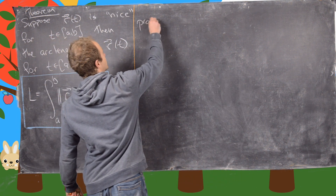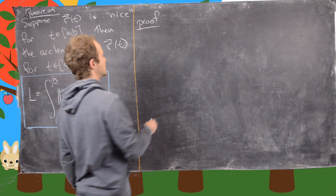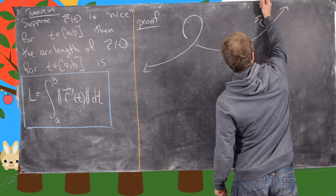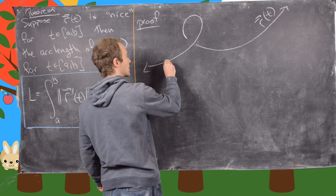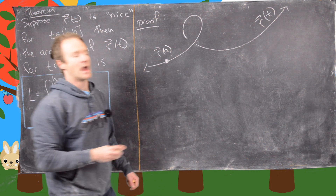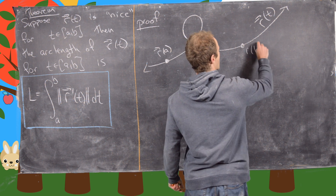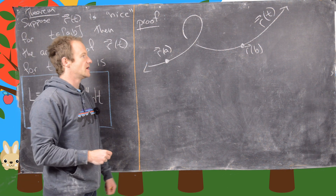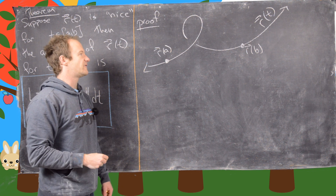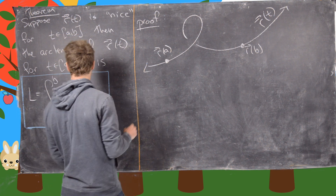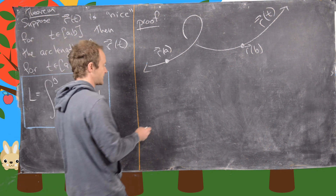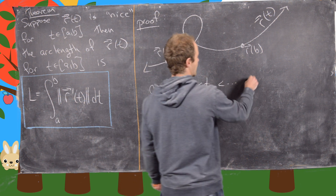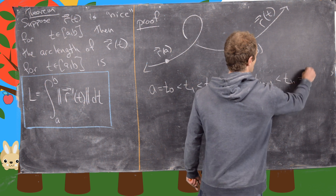Let's look at the proof. We'll start with a little sketch of what's going on. So let's say this is the curve r of t, and over here is the point r of a, and over here is the point r of b. What we want to do first is approximate the arc length by the simplest way possible — finding the length of some straight lines. We will partition the interval from a to b as follows: a equals t-naught, less than t1, less than t2, all the way up to t_{n-1}, less than t_n, which equals b.